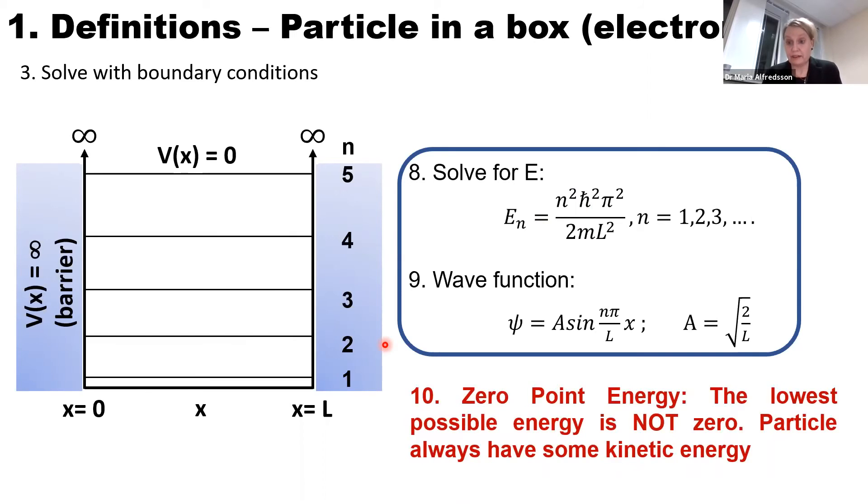We have a zero point energy, which means that an electron always has some kinetic energy. Even at zero Kelvin, an electron has kinetic energy. That's really important.